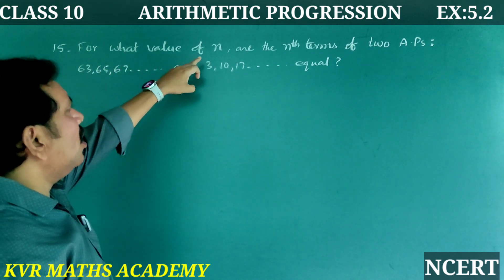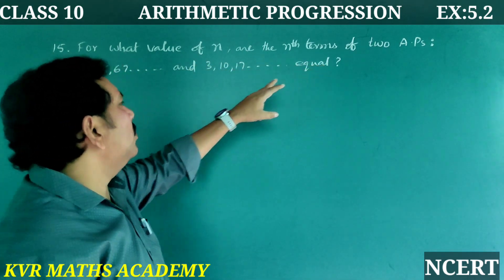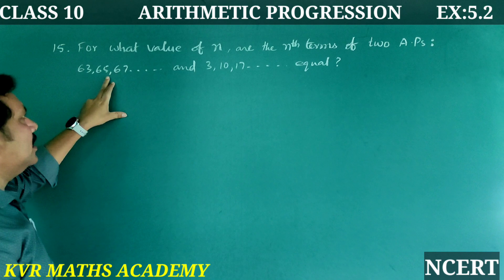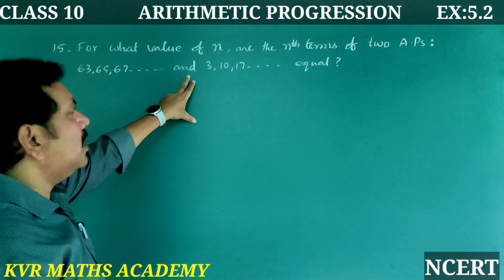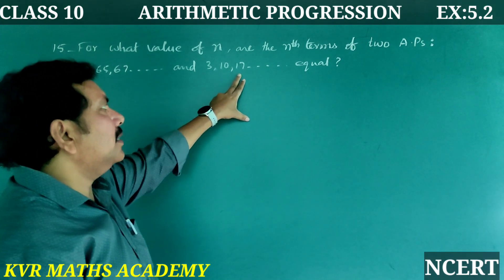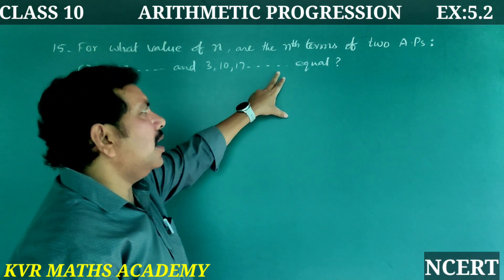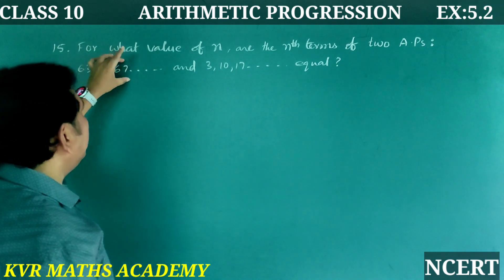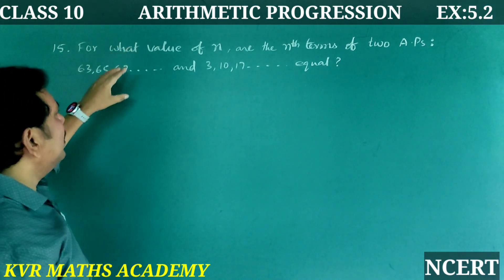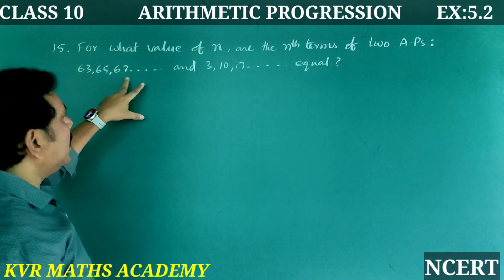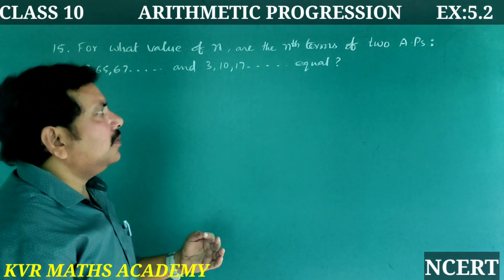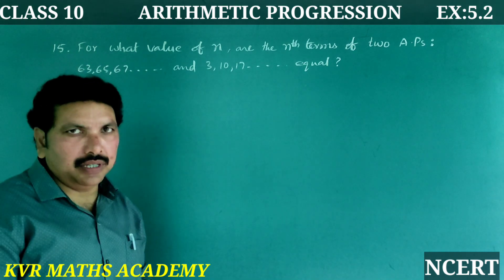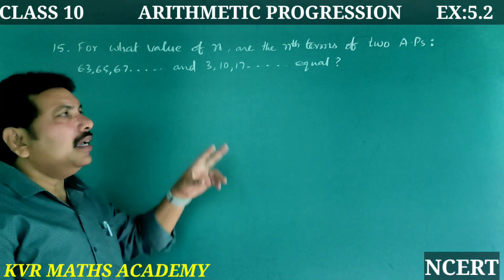Next, the 15th problem: For what value of n are the nth terms of two APs — 63, 65, 67, … and 3, 10, 17, … — equal? We need to find n such that the nth term of the first AP equals the nth term of the second AP.